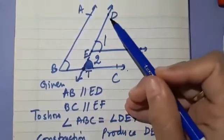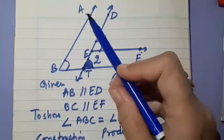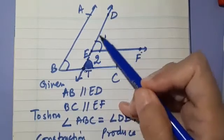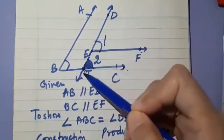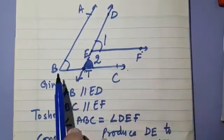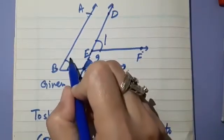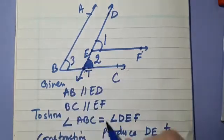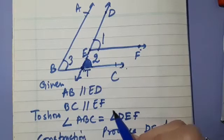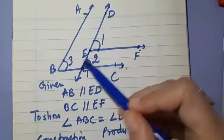Similarly, if you consider pair of lines DT and AB, it is given that AB is parallel to DE. And we have extended this DE to make the line DT. So AB will be parallel to DT as well. And consider BC as the transversal. What can you say about angle 2 and angle 3? Yes, they are also making a pair of corresponding angles, so they will be equal. You see that angle 1 is equal to angle 2, and angle 2 is equal to angle 3.